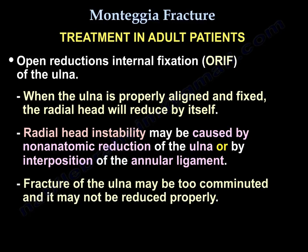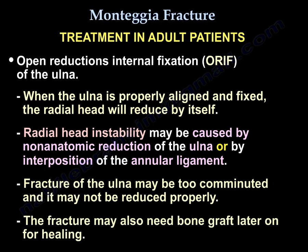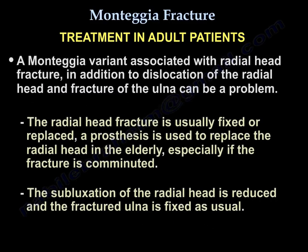The ulnar fracture may be too comminuted and may not be reduced properly; it may also need bone grafting later on for healing. There might be a Monteggia variant associated with a radial head fracture in addition to dislocation of the radial head. The radial head fracture is usually fixed or replaced. A prosthesis is used to replace the radial head in the elderly, especially if the fracture is comminuted.